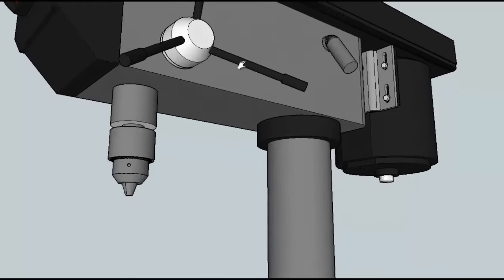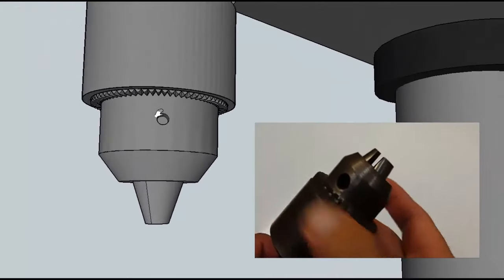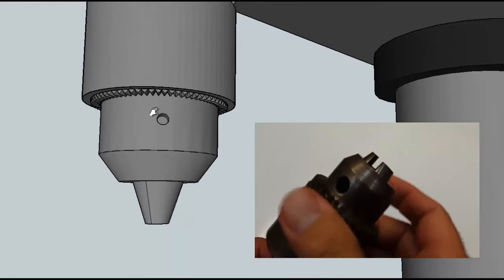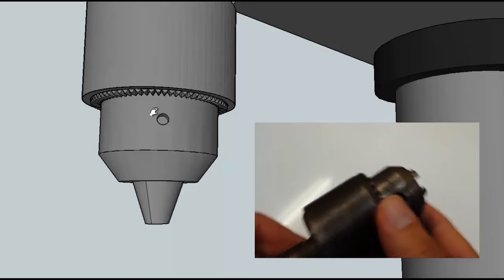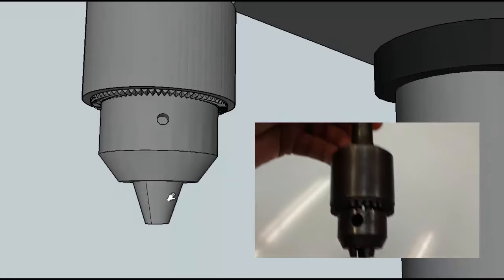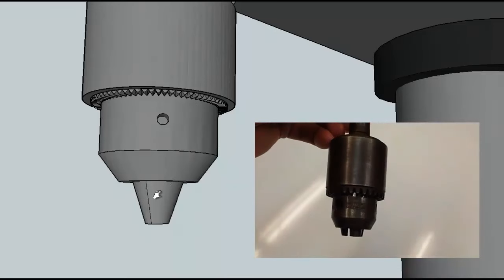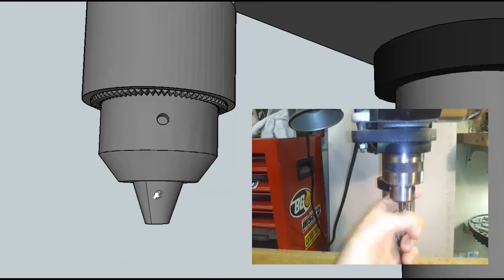At the bottom of the spindle is the chuck. Now the chuck is a pretty neat little gizmo that helps grab onto round items, your bits that you'd be putting in there, and it automatically centers them because there's three teeth or jaws that are down here that automatically center it so it doesn't wobble around.